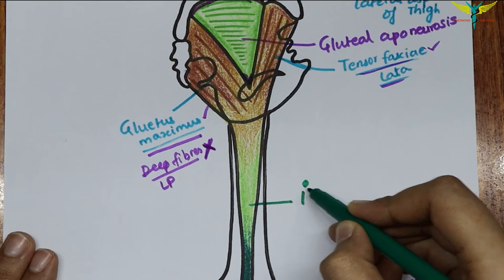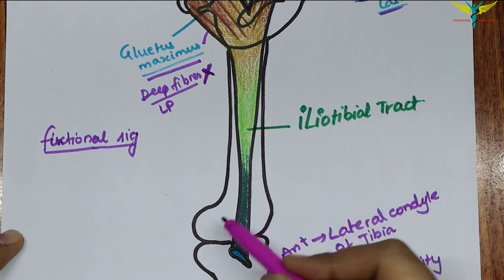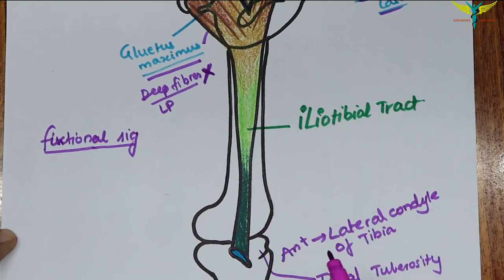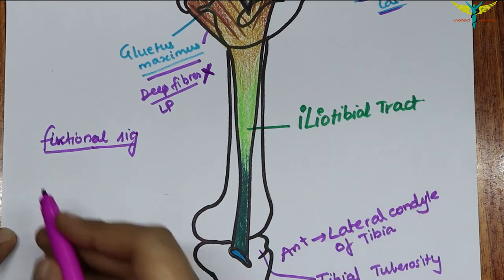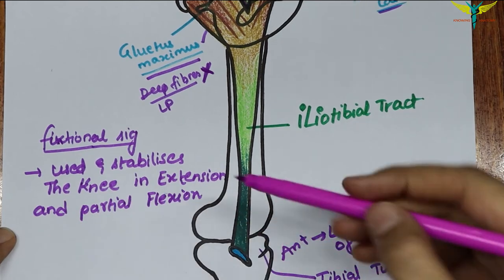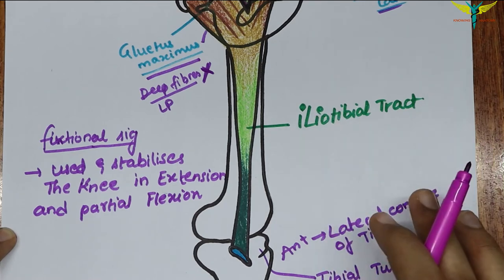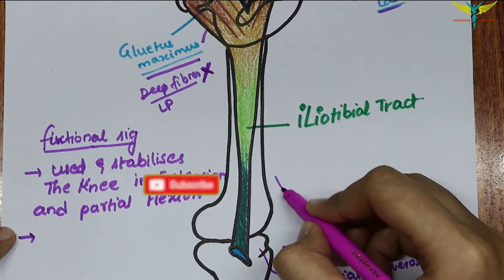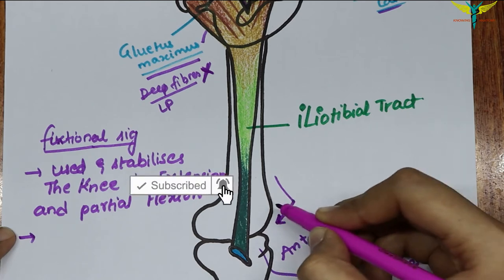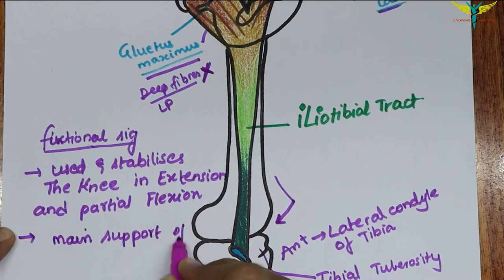The functional significance of the iliotibial tract is that it stabilizes the knee in both extension and in partial flexion, so it is used constantly during walking and running. On leaning forward with slightly flexed knees, the iliotibial tract is the main support of the knee against gravity and it prevents the individual from falling forward.